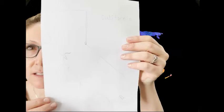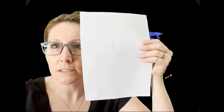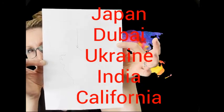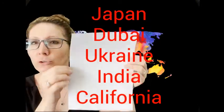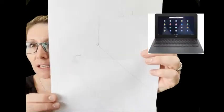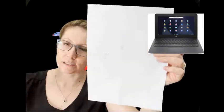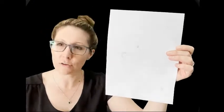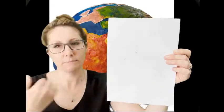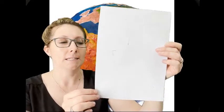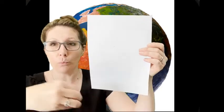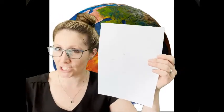Step one: pick your nation, state, or country. I'm going to use California. You have to use a Chromebook to figure out the elevation rises and falls — your teacher will help you find that. Then you're going to draw the contour lines on your map where you see those elevation changes.